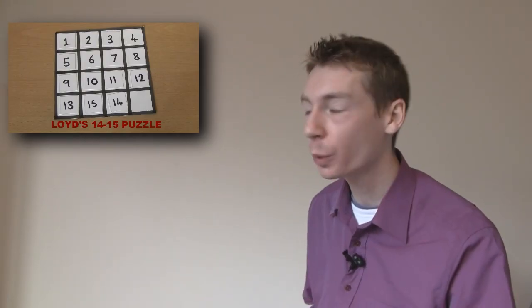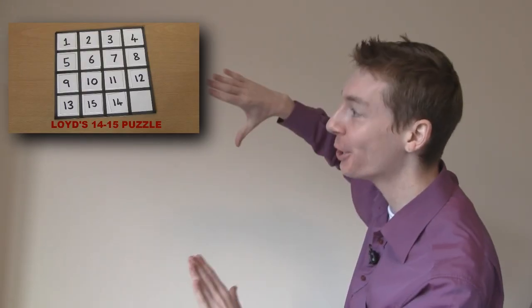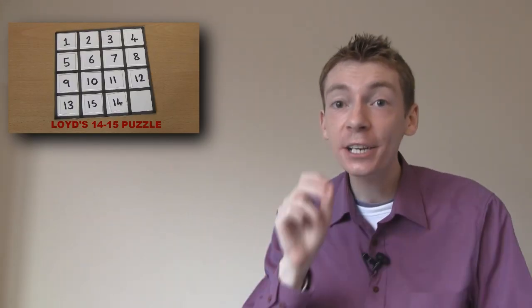Puzzle number three. Starting from Sam Lloyd's version, 14 and 15 are swapped over. Can you solve this so that each row and each column and the two diagonals all add up to 30?